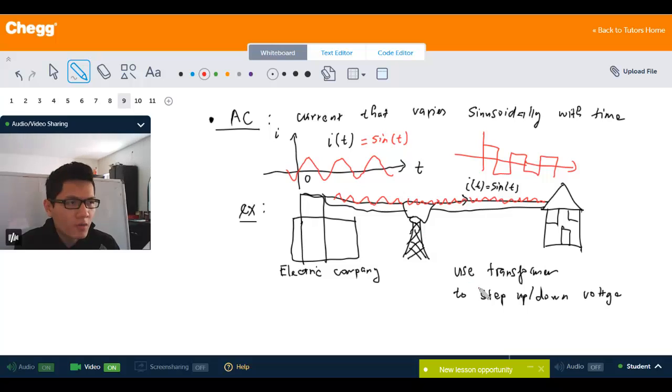And they use something called the transformer to step down the voltage when it gets to your house. Because AC is also easier to increase the voltage up to a few hundred thousand volts on the transmission line. But then when it reaches your city, it can step down to 120 volts to each house. So in general, it can deliver a large amount of electric power to a given area.